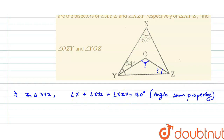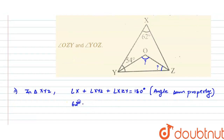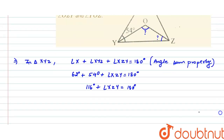Angle X is given as 62 degrees and angle XYZ is given as 54 degrees. So 62 plus 54 plus angle XZY equals 180 degrees. That gives us 116 plus angle XZY equals 180 degrees. Therefore angle XZY equals 180 minus 116, which comes out to be 64 degrees.